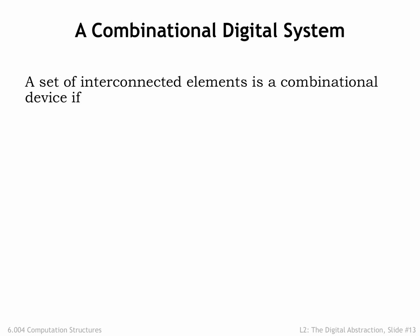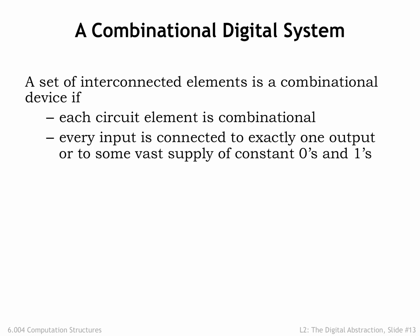In order to build larger combinational systems from combinational components, we'll follow the composition rules set forth below. First, each component of the system must itself be a combinational device. Second, each input of each component must be connected to a system input or to exactly one output of another device, or to a constant voltage representing the value 0 or the value 1.